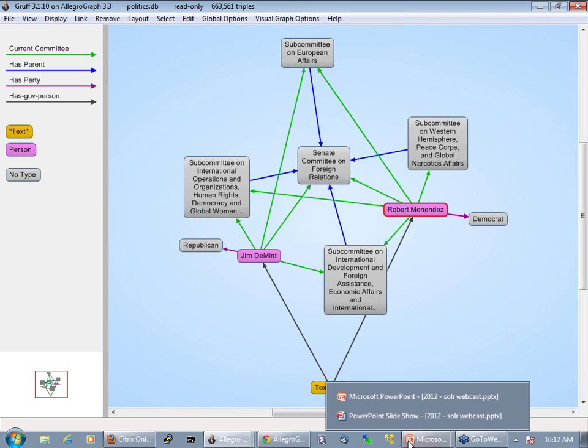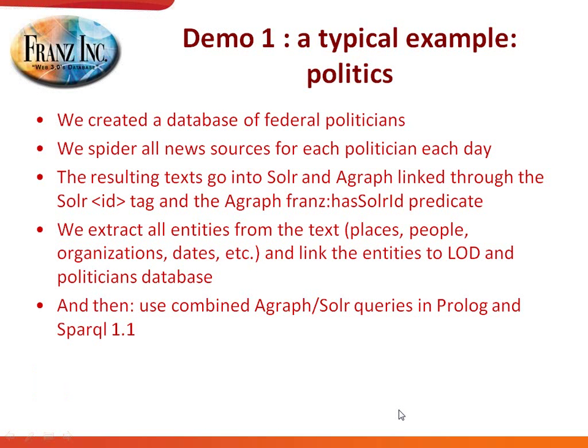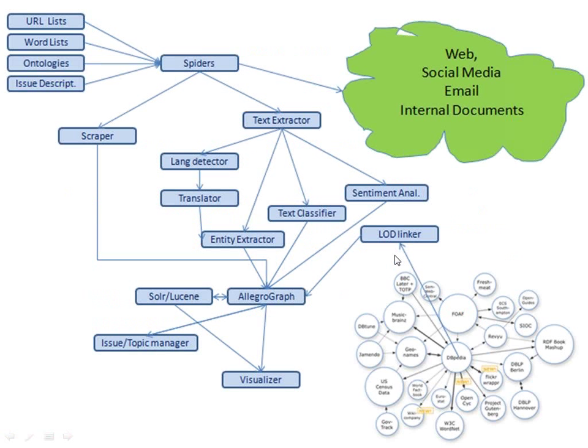This is the template we see most often. We have spiders that are intelligently controlled to go out to the web, email, and internal documents, using a text extractor. Maybe we translate it, we classify it, we put it through an entity extractor, and then we put stuff into AllegroGraph and Solr, where we also link the entities to the linked open data cloud. That's roughly the architecture we see.